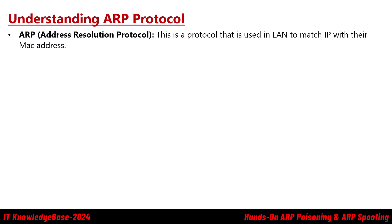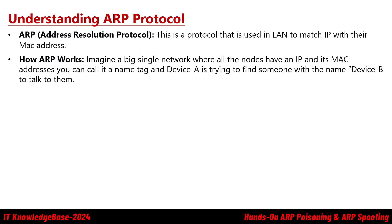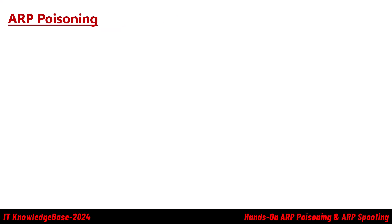Understanding ARP — Address Resolution Protocol. ARP is a protocol used in a LAN to match IP addresses with their MAC addresses. Imagine a big single network where all the nodes have an IP and a MAC address — you can think of this like a name tag. Device A is trying to find someone with the name Device B to talk to them.